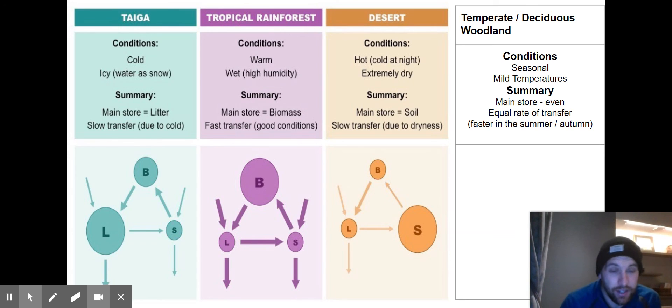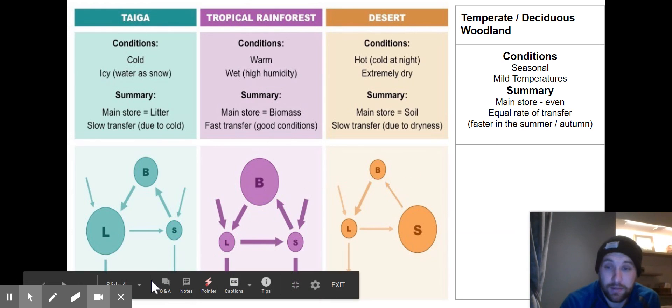And the annual cycle is fairly even. Now during the summer there's going to be a lot more growth. During the winter there's going to be more stored in the leaf litter and in the soil because those trees aren't growing and those leaves aren't necessarily falling off. But when we look at an annual nutrient cycle, it's a balanced system in temperate deciduous woodlands. So yeah, I hope that all helps, and as always, any questions please pop them in the chat below.